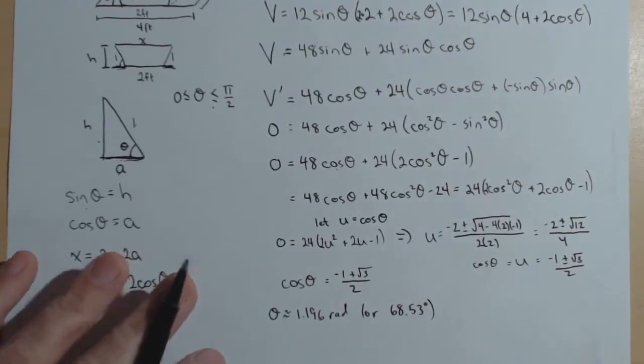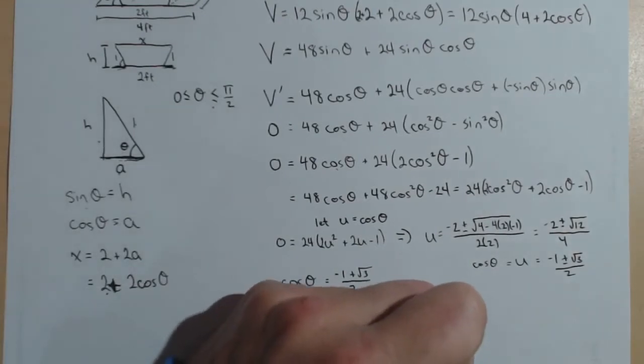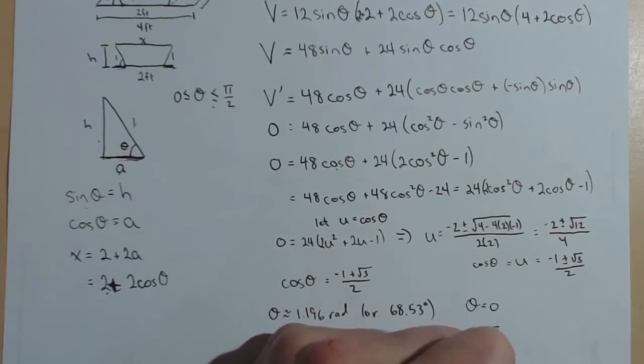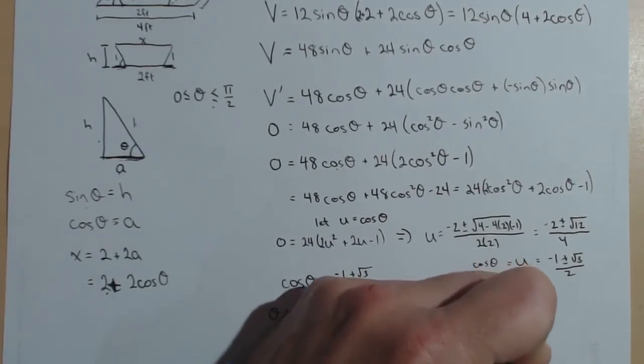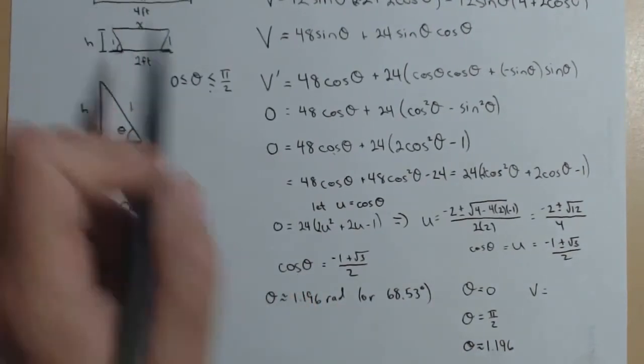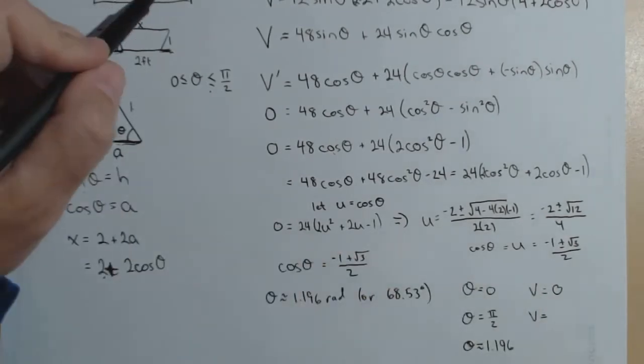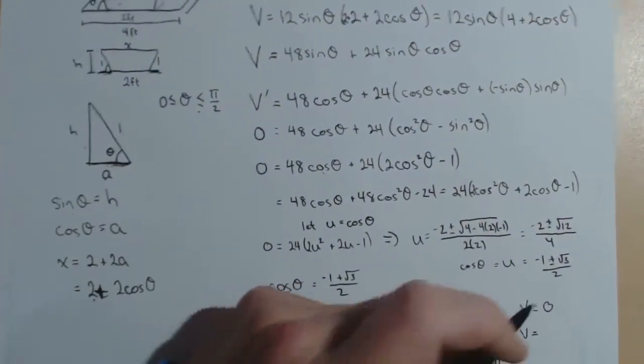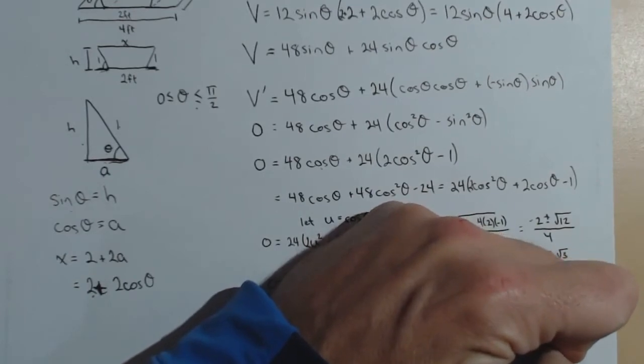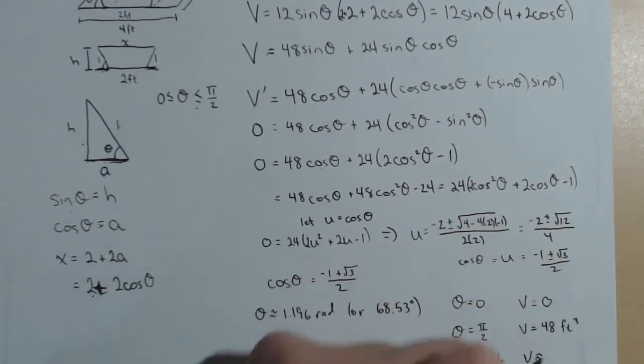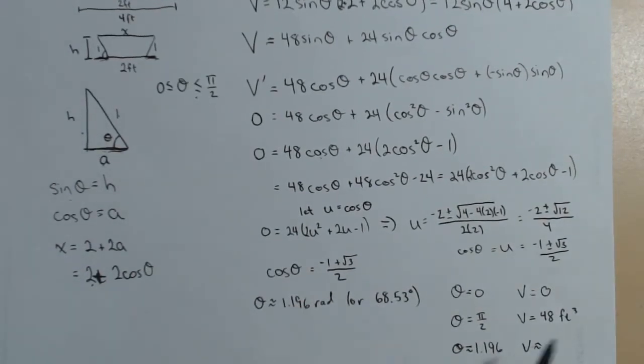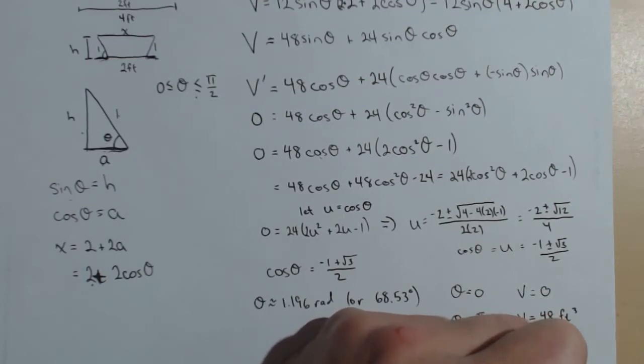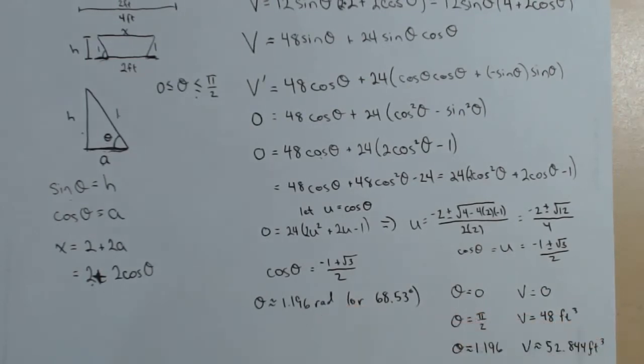And so now, we look at the absolute max and the absolute min. We're going to evaluate our volume at theta equals 0, theta equals pi over 2, and theta is approximately 1.196 radians. If theta is 0, there is no box at all, so the volume is 0. If theta is pi over 2, it's just a rectangular box, because these sides will be straight up, and it turns out that the volume would be 48 cubic feet. Finally, if it's about 1.196, that's where we're going to actually have our maximum volume, because it turns out the volume comes out to be 52.844 cubic feet.